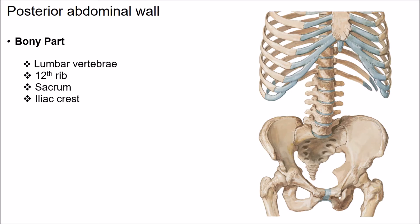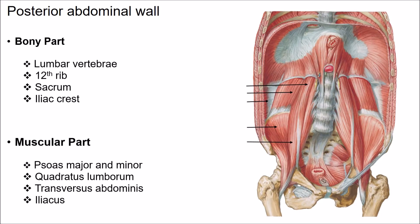The bony part is formed by the bodies of five lumbar vertebrae in the midline, above and laterally by the inner surface of the 12th thoracic rib, and below and laterally by the ala of sacrum and iliac fossa.